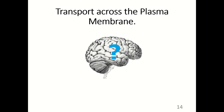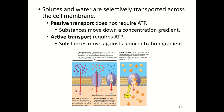Solutes in water are selectively transported across the cell membrane in two major ways. Passive transport does not require ATP — substances move down a concentration gradient. Active transport requires ATP — substances move against a concentration gradient. In passive transport, substances move from a high concentration to a low concentration, which does not require energy.